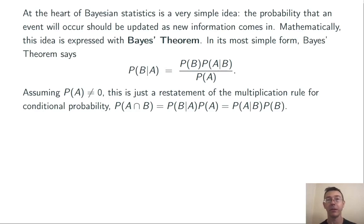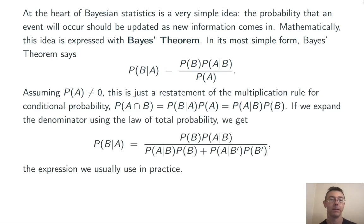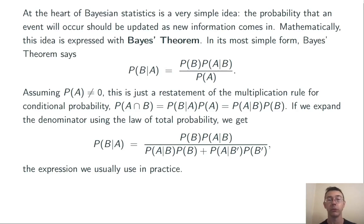Obviously, the formula only makes sense when the probability of A is not equal to 0. The denominator of the right-hand side, the probability of A, can be rewritten in a more useful form, albeit a slightly longer form, using the law of total probability.